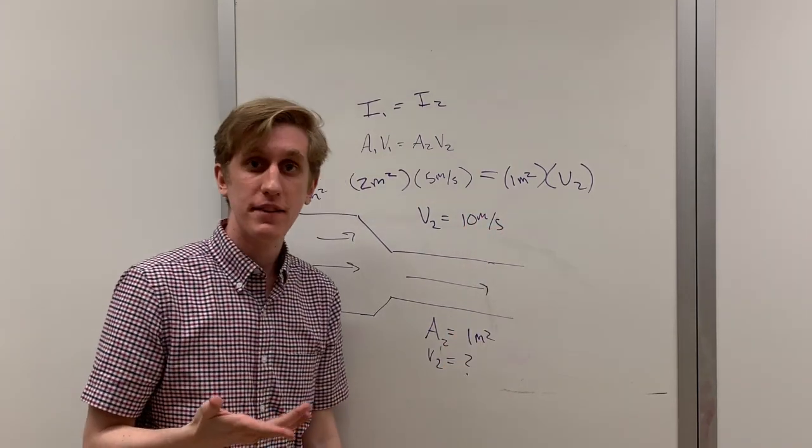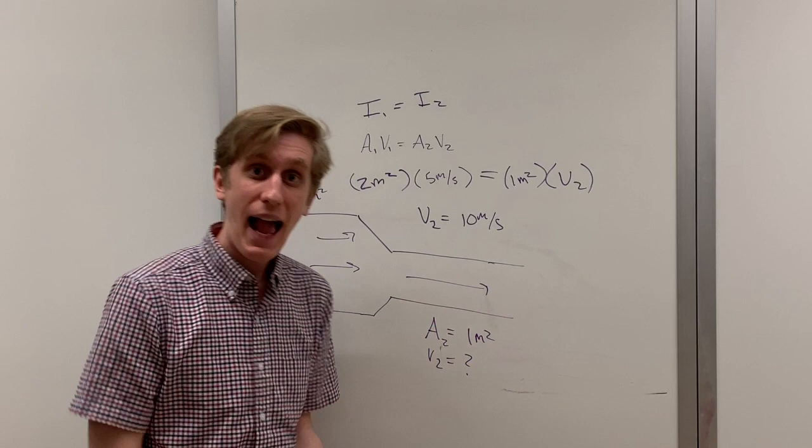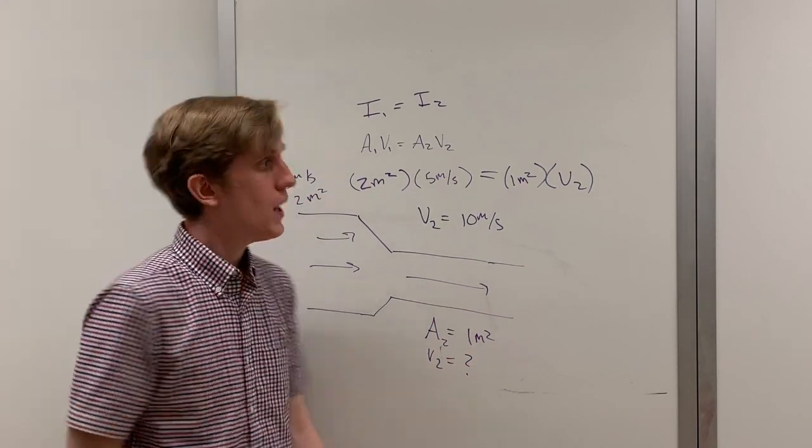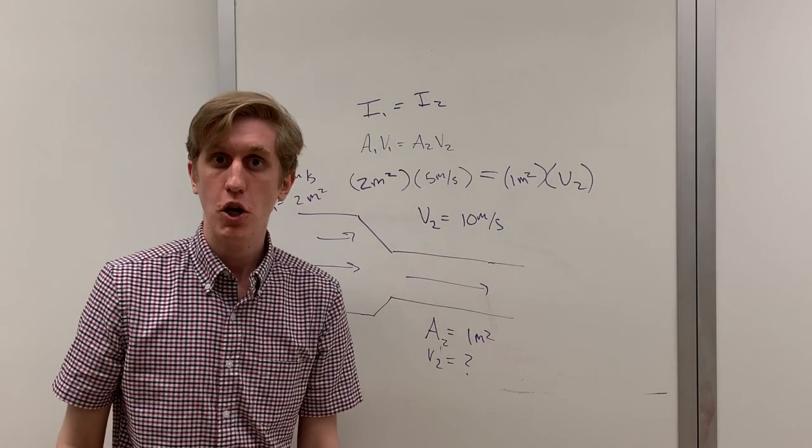As you may have expected, when the area of the pipe halved, the velocity of the water flowing through it had to double in order for the continuity equation to remain true.